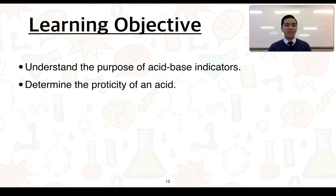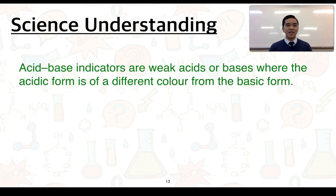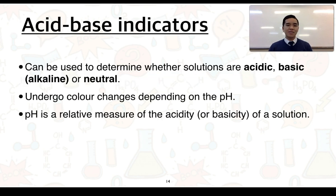In this video we're going to cover these learning objectives: we're going to talk about acid-base indicators and their purpose, and then we're also going to look at determining the proticity of an acid. Acid-base indicators are weak acids or bases where the acidic form is a different color from the basic form. They can be used to determine whether solutions are acidic, basic, alkaline, or neutral.